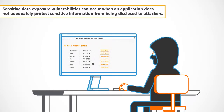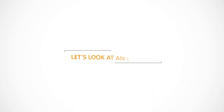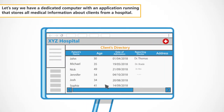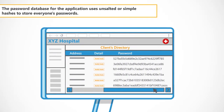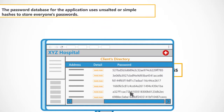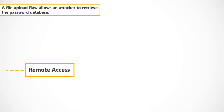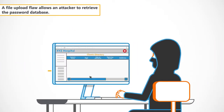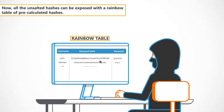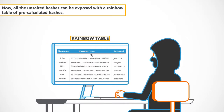To understand sensitive data exposure vulnerabilities, let's look at an example. Let's say we have a dedicated computer with an application running that stores all medical information about clients from a hospital. The password database for the application uses unsalted or simple hashes to store everyone's passwords. A file upload flaw allows an attacker to retrieve the password database. Now all the unsalted hashes can be exposed with a rainbow table of pre-calculated hashes.